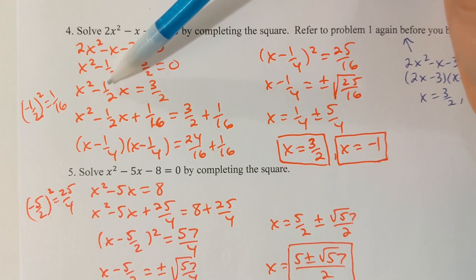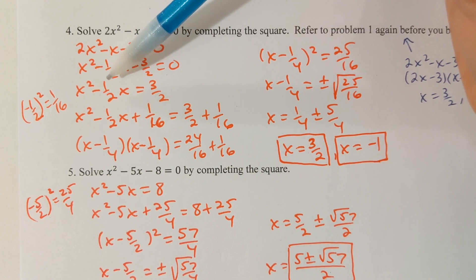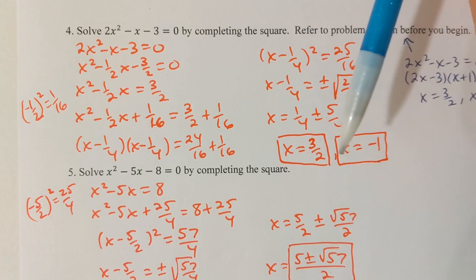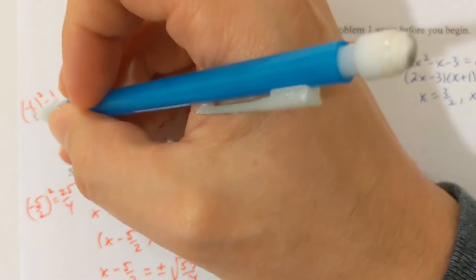For this problem, I've got a negative 1/2 in front of x. I want half of that number, which is negative 1/4.